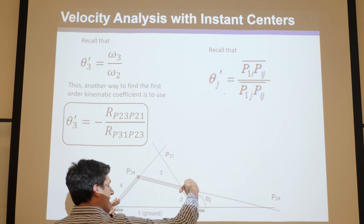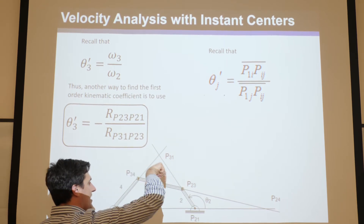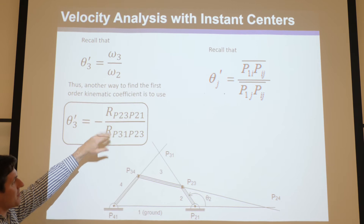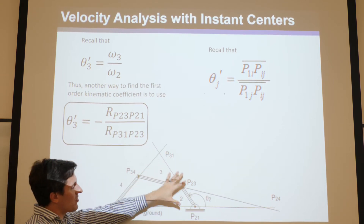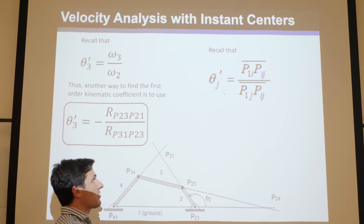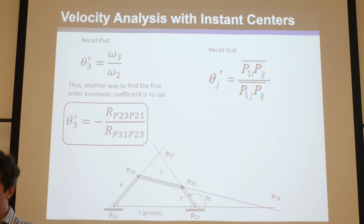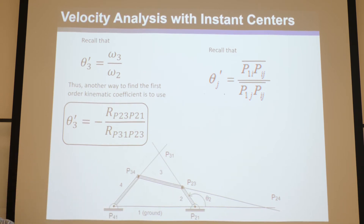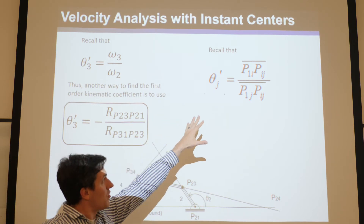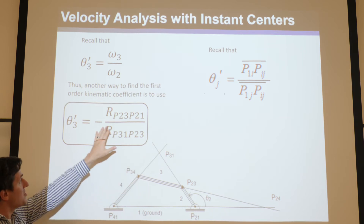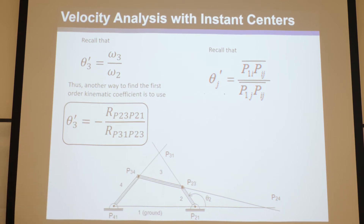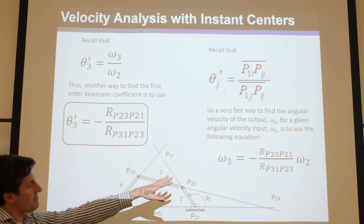You can visualize this: in this configuration, if the input starts moving, this point moves down and this point moves kind of up — so you can imagine link 3 rotating in the negative direction relative to link 2. To find the sign, you can either do the full vector approach or just use your intuition. At least you always get the magnitude from this approach. No matter what your mechanism, this convention gives you the magnitude of the first-order kinematic coefficient; then intuit or visualize the sign, multiply by omega_2, and you get omega_3.